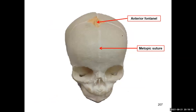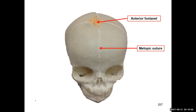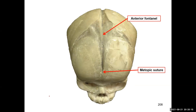The metopic suture is a remnant of incomplete fusion in the frontal bone, resulting from the left and right parts of the body folding anteriorly during fetal development. Normally, this fuses completely. When fusion is incomplete, you can see the remnants of where the bone was supposed to fuse, visible alongside the anterior fontanelle.